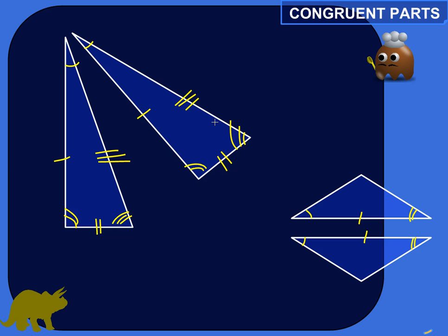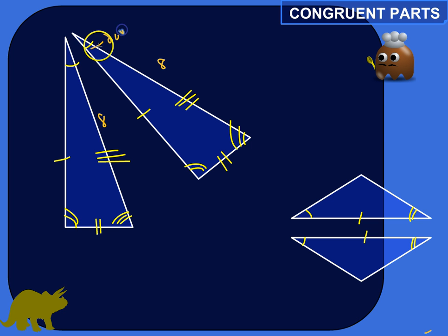Congruent triangles have congruent corresponding sides and congruent corresponding angles. What that means is that the sides that match up or correspond to each other have the same measure. So if this side measurement were 8, and this is congruent to this side, this would also be 8. And congruent corresponding angles — say this is 20 degrees — that means this would also be 20 degrees.